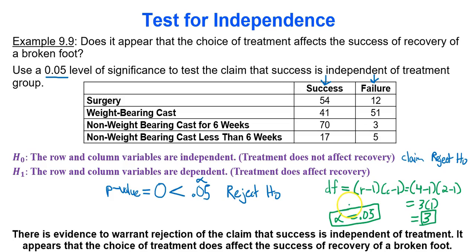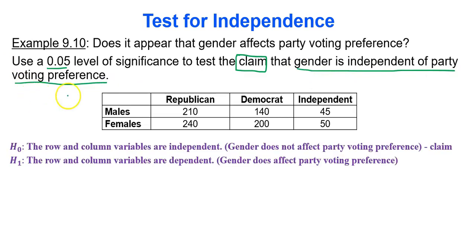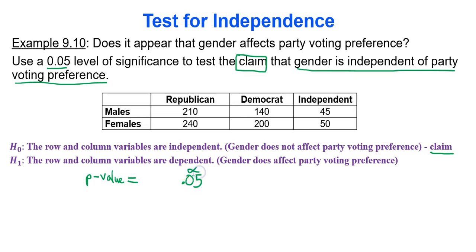Critical values for chi-squared are always found from the table — use alpha and degrees of freedom. For the last example: does it appear that gender affects party voting preference? Use a 0.05 level of significance to test the claim that gender is independent of party voting preference. The null hypothesis is that gender does not affect party voting preference, the alternative is that it does. We just need to type this into Google Sheets, get the p-value, compare it to alpha, and be done.